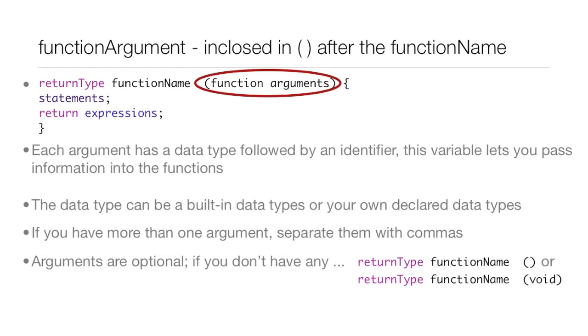The data types you use to declare these new variables can be built-in data types or your own declared data types. If you have more than one argument, separate them with commas. Arguments are optional, so if you don't have any, just put parentheses and leave nothing in it, or put void inside the parentheses.